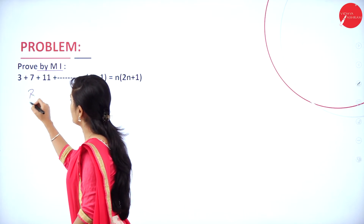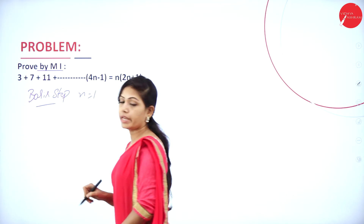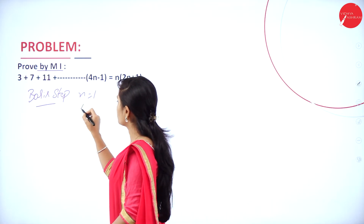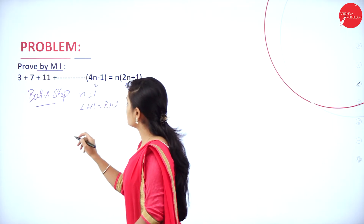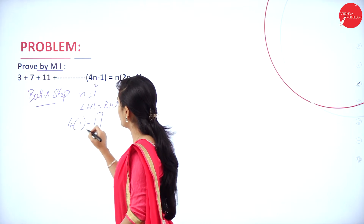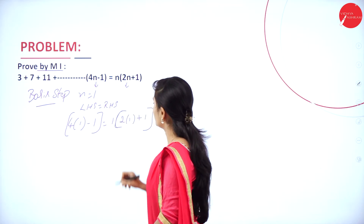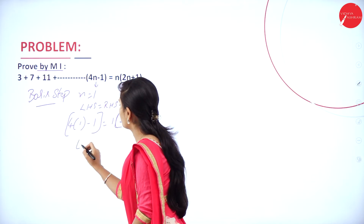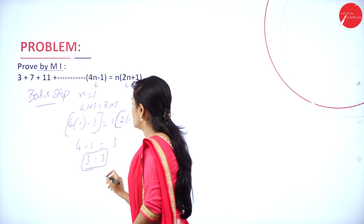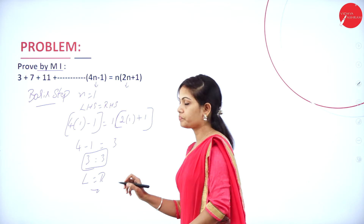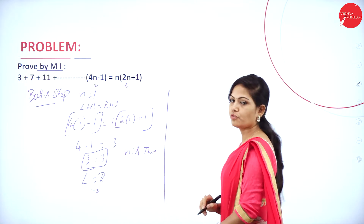The first step is the basis step. In the basis step you have to prove that n equals 1 is true, that is LHS equals RHS. Substitute the value of n: 4 into 1 minus 1 is equal to 1 into 2 into 1 plus 1. Now 4 into 1 is 4, 4 minus 1 is 3, and 2 plus 1 is 3. So 3 equals 3, therefore LHS equals RHS. The result is true for n equal to 1.